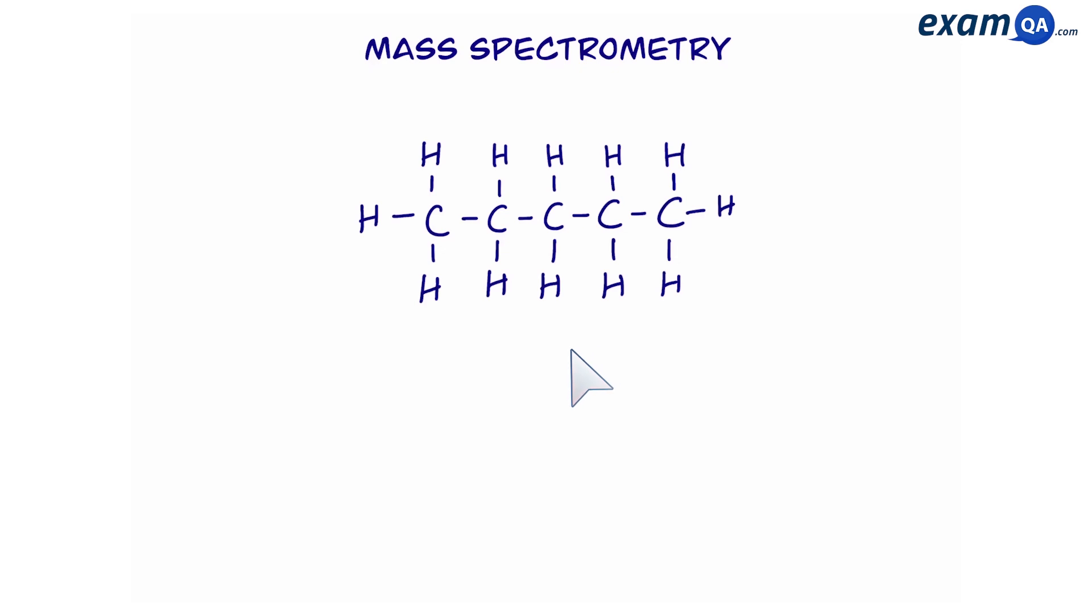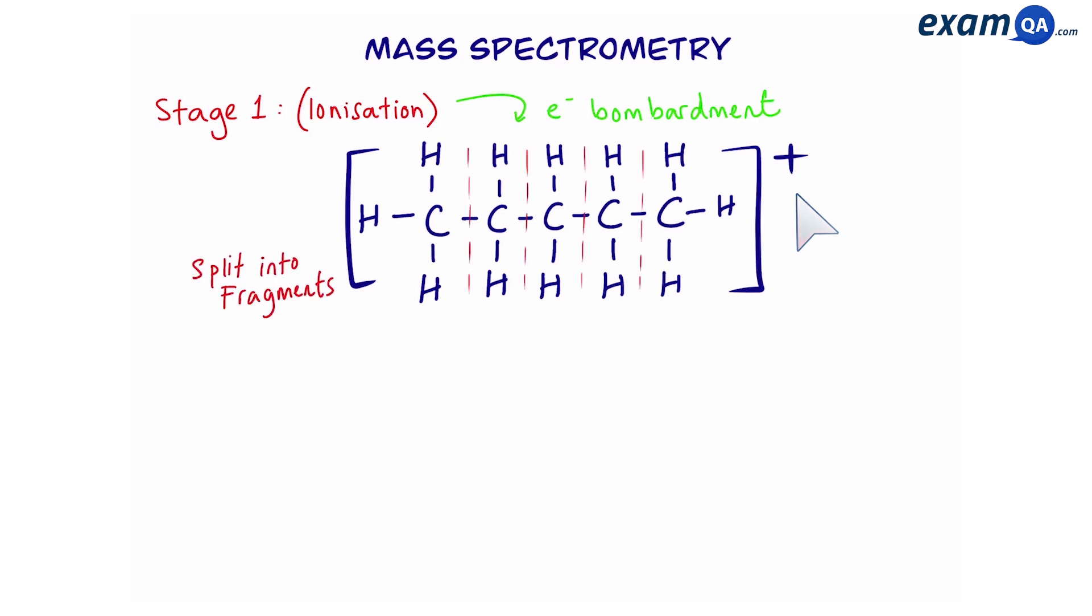Once we put a sample of pentane into the machine, we know that in step one, it will be ionized. This means that it will be bombarded with electrons. This turns it into a molecular ion. However, it can also destabilize it and split it into fragments.